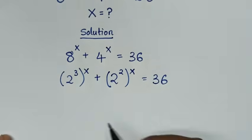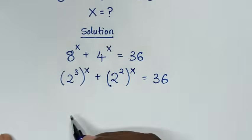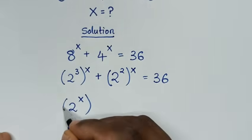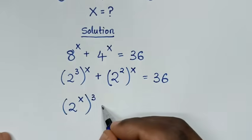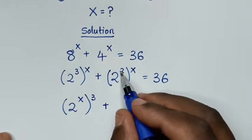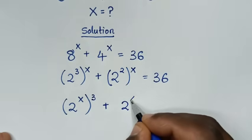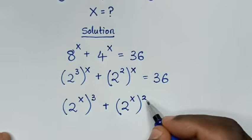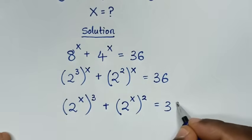In the next step, we take the power x inside and the power 3 outside. So it will be (2^x)³, plus we take power x inside and power 2 outside, so it will be (2^x)², and this equals 36.